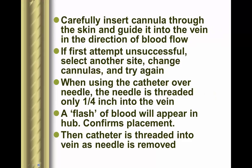In performing the venipuncture, carefully insert the cannula through the skin and guide it into the vein in the direction of blood flow — coming up toward the heart. If your first attempt is unsuccessful, select another site, get a new cannula, and try again. Once you hit the vein, you'll see a flash of blood appear in the hub, indicating you're in the vein. At that point, do not advance the needle further; instead, slide the plastic sheath down the needle into the vein.